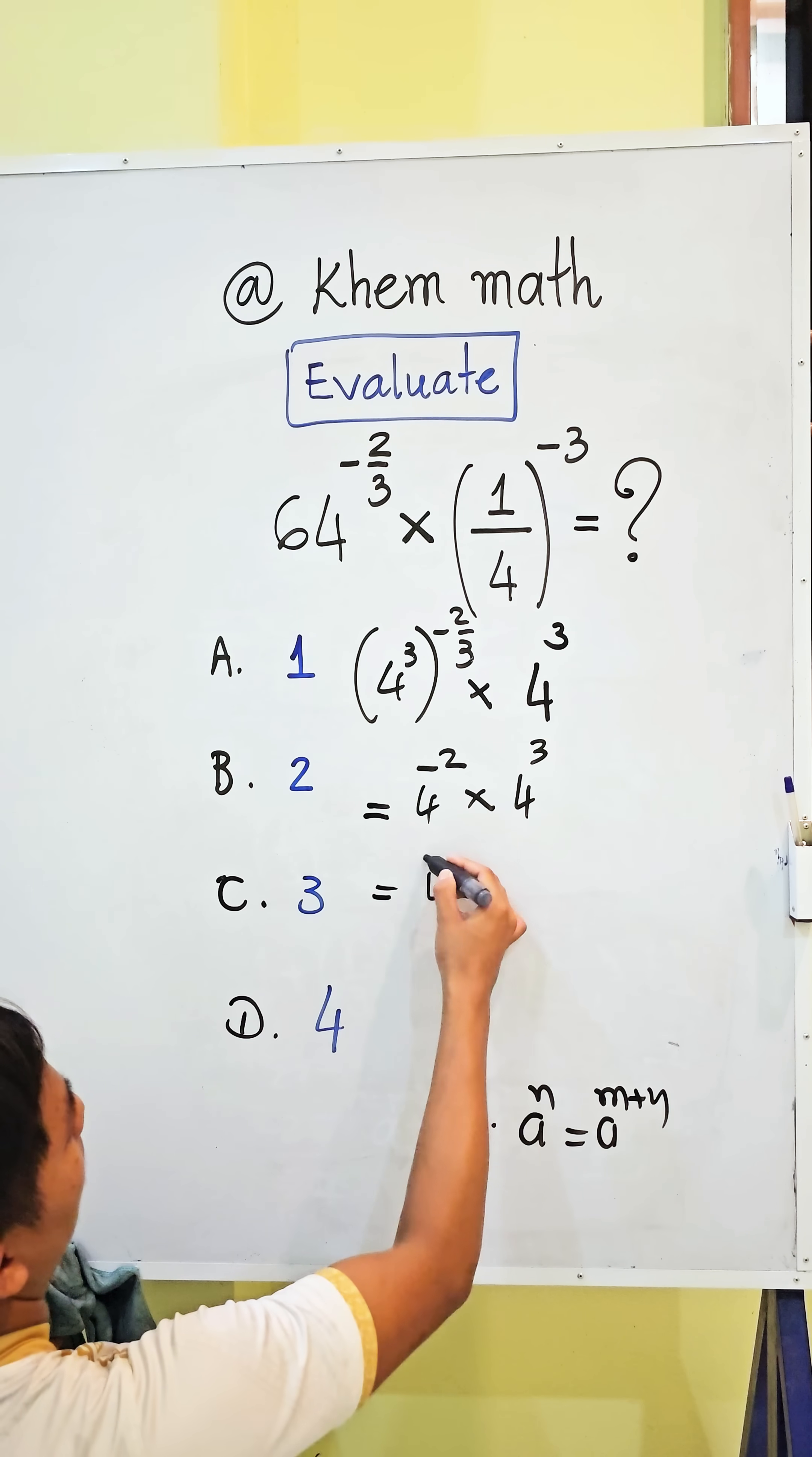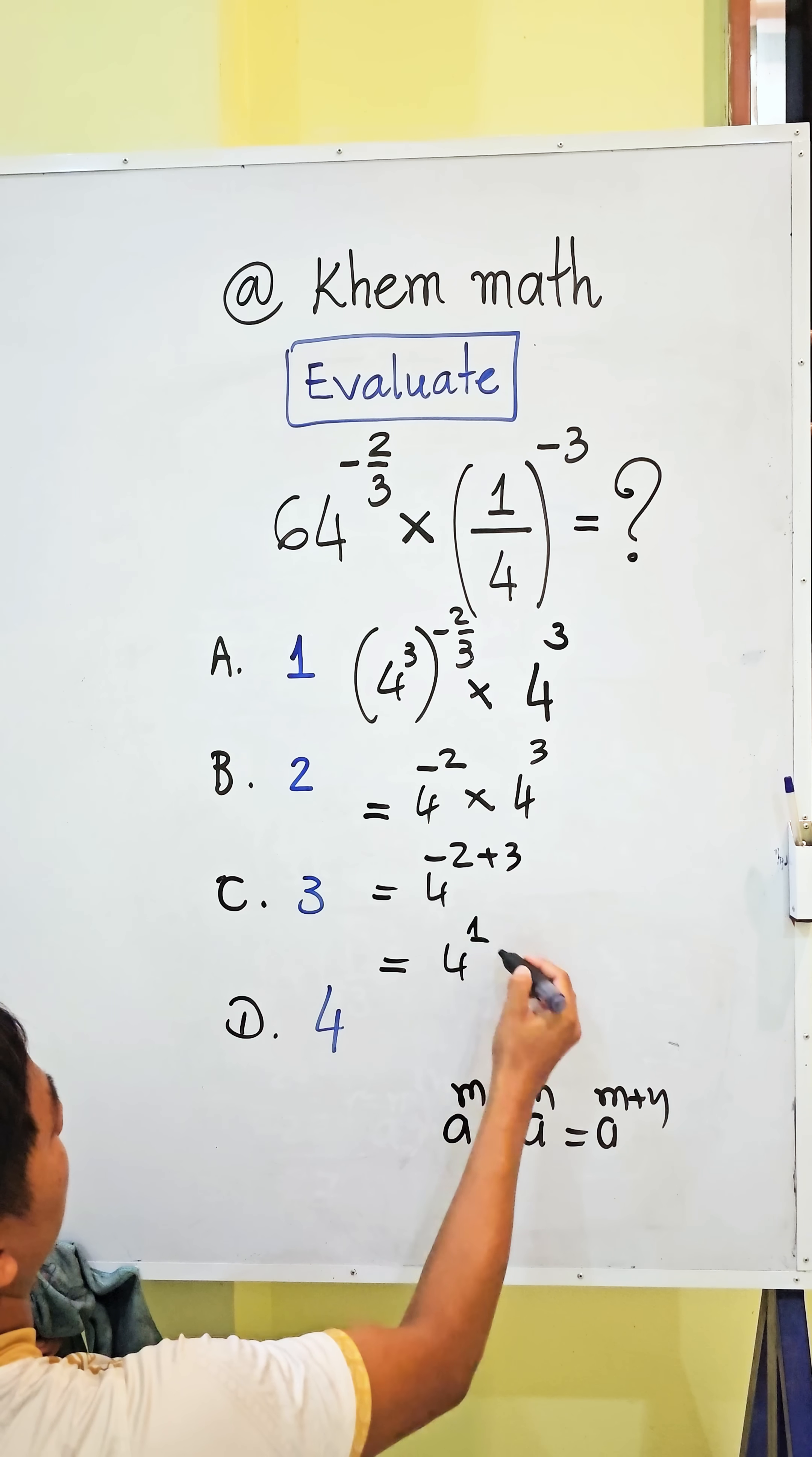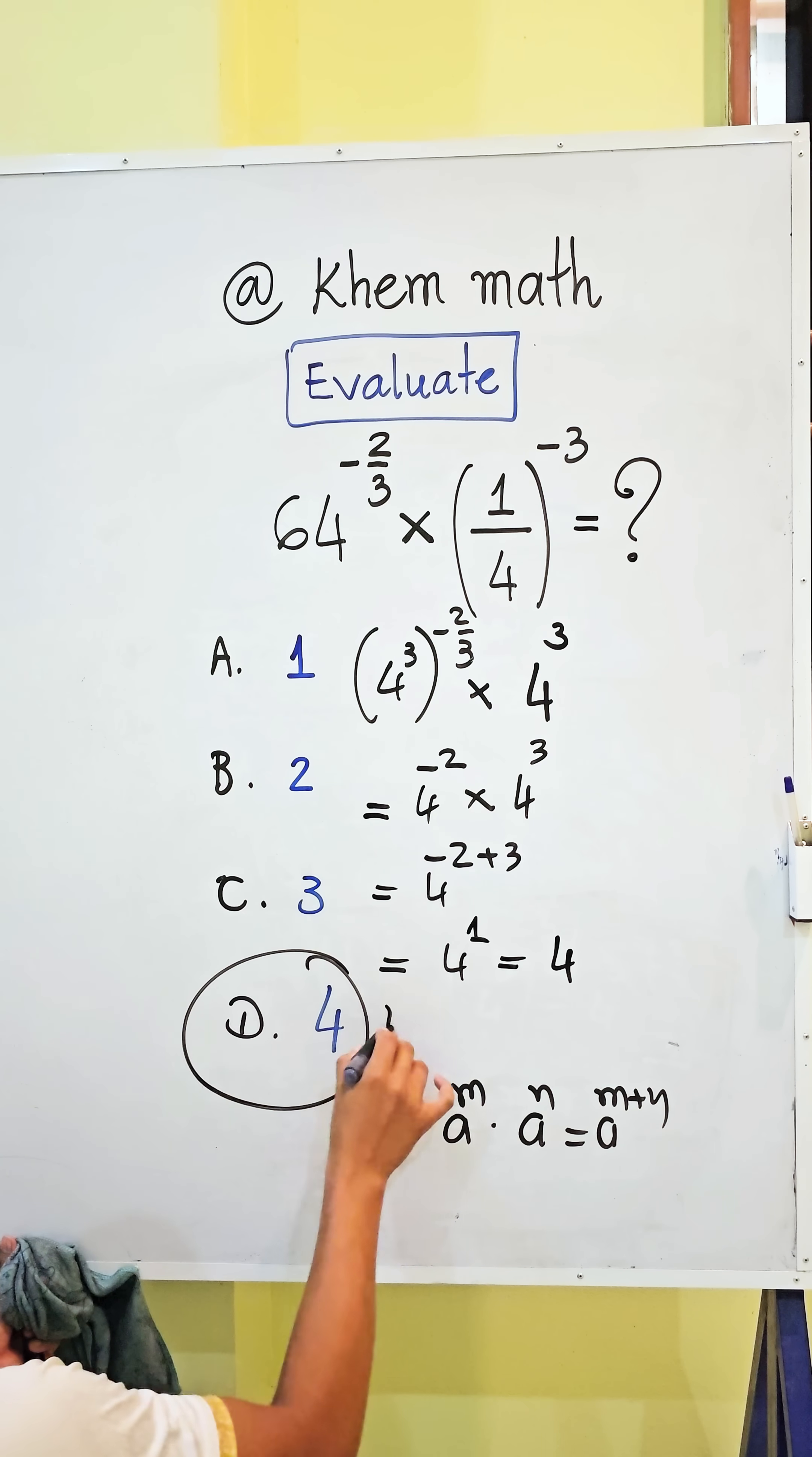So we get this 4 power negative 2 plus 3. And we get this 4 power 1, so equal 4. So our answer is D.